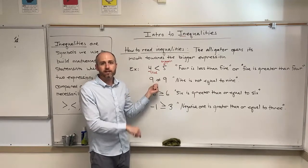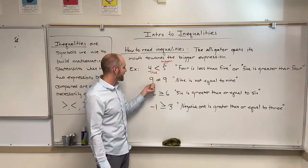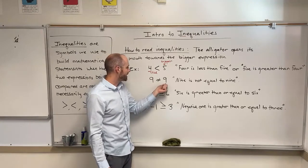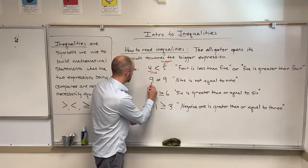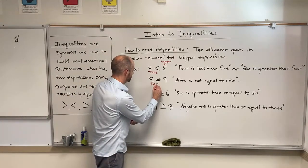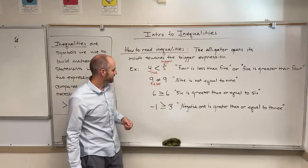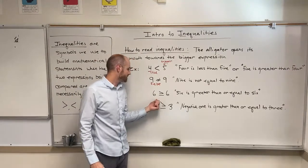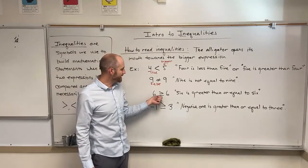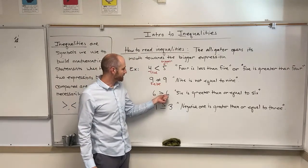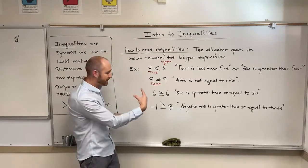The second one says nine is not equal to nine. This symbol — an equal sign with a slash through it — means 'not equal to.' So this says nine is not equal to nine, and that is a false statement.